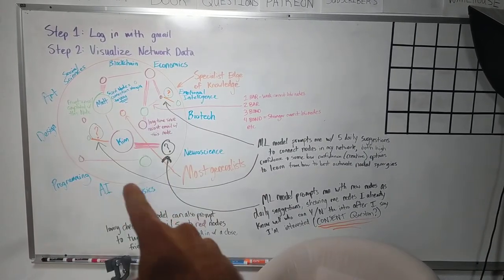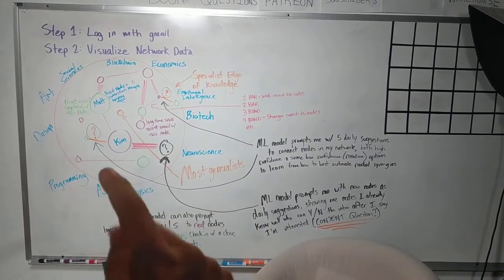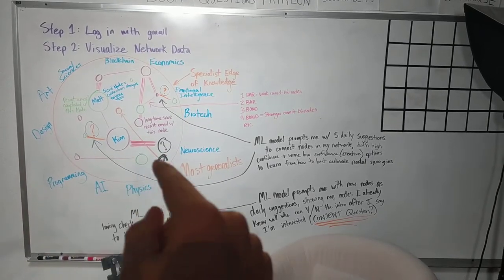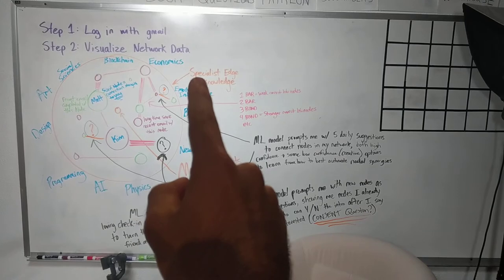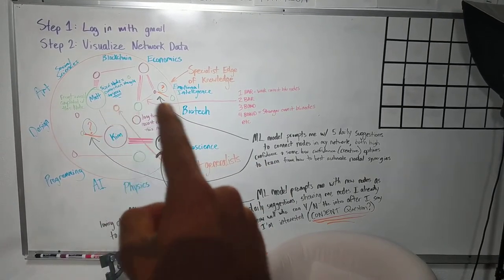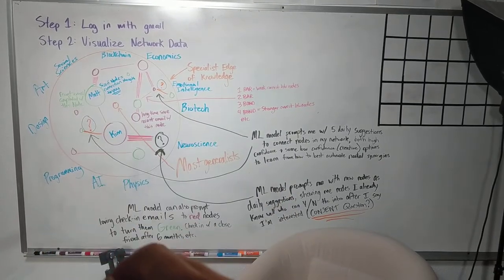So here is, again, this is a two-dimensional. This is not 3D quite yet. We're aiming to visualize how it would populate in 3D, but right now there's a specialist edge of knowledge and there's a most generalist in the center. So the generalists are in the center and the specialist edge of knowledge across all these blue fields, let's just hypothetically say.